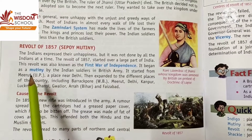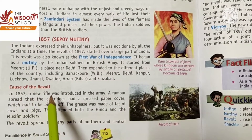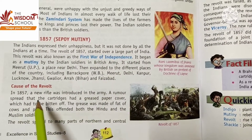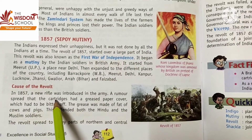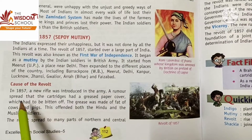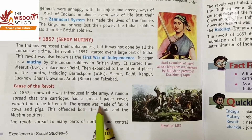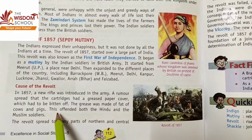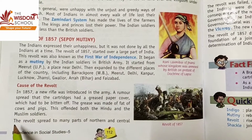The cause of the revolt in 1857 was that a new rifle was introduced in the army. A rumor spread that the cartridges had a greased paper cover which had to be bitten off. The grease was made of fat of cows and pigs, which deeply offended both Hindu and Muslim soldiers.